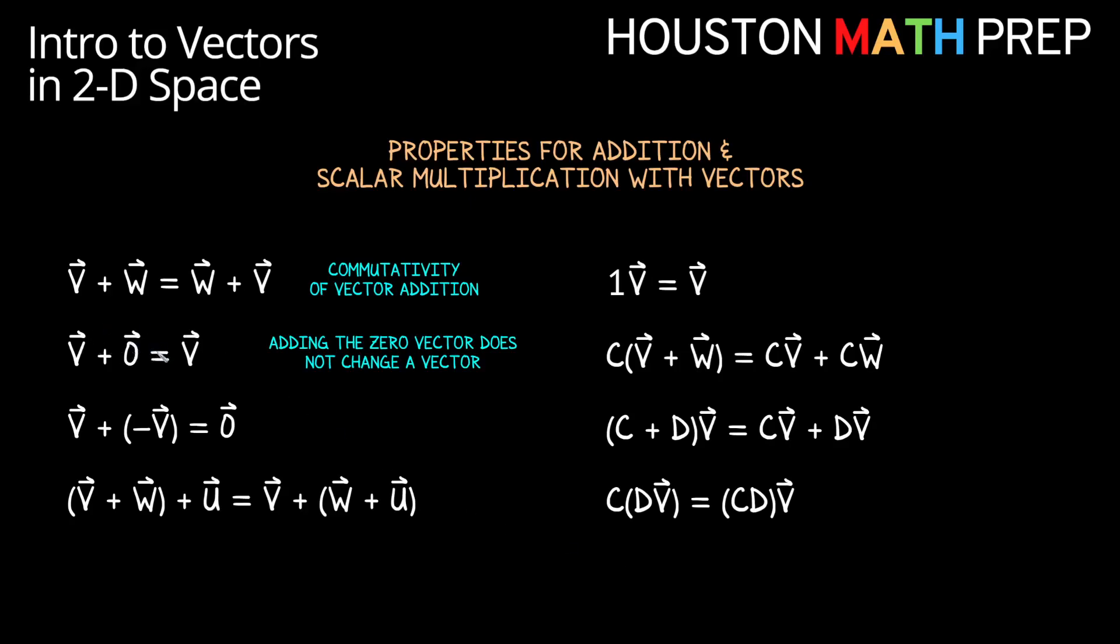Next, taking any vector and adding the 0 vector to it will not change the original vector. This is the idea of having an object that makes no change when you use it with addition, which we call an additive identity in math. Think about when we're doing addition with real numbers, we have a specific real number that doesn't change other numbers when we add it to them, right? It's the number 0. So in the same way when we're working with vectors, we also have a vector that makes no change when we add it to other vectors, and it's the 0 vector.